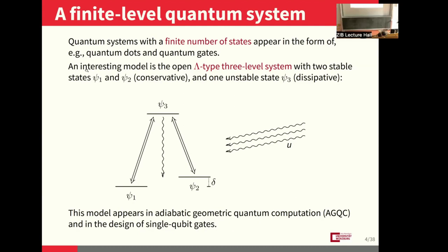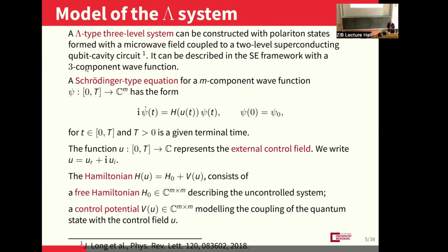The structure in this case is a small system with three components of a complex vector, which is the state of the system. The modeling of this system is quite well known by the Schrödinger equation, where we can use two representations: we can work with two real controls, or equivalently, I work here considering a complex control function U with two components. As usual, we have a drift — the free Hamiltonian — and a control potential.